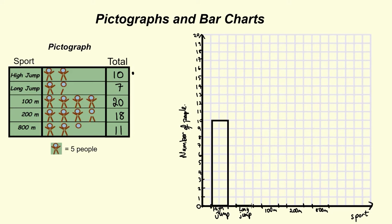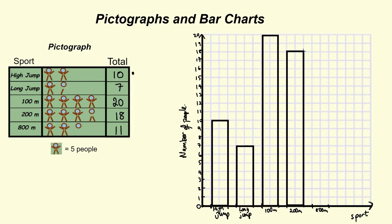Long jump goes up to seven. So same idea. Width of the two boxes, then up to seven. We're just doing that as we go along. Nice and simple. 100 meters was 20, that was the most popular, so right up to the top. The 200 meters, a little less popular, it's only gone up to 18. And the 800 meters was 11 people.